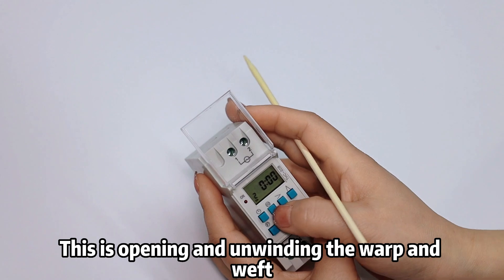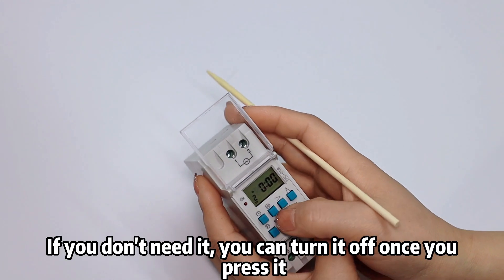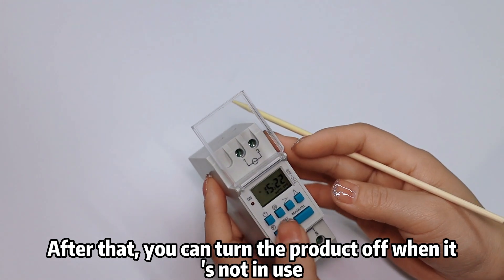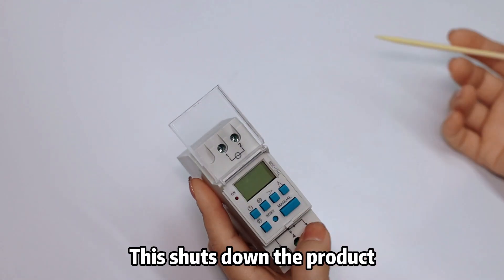Open it if you want. If you don't need it, you can turn it off once you press it. After that, you can turn the product off when it's not in use. To turn off, press these two keys together - this shuts down the product.